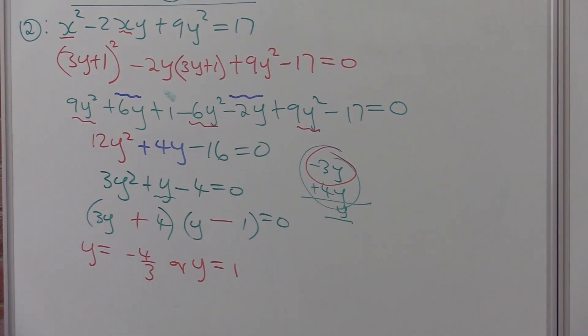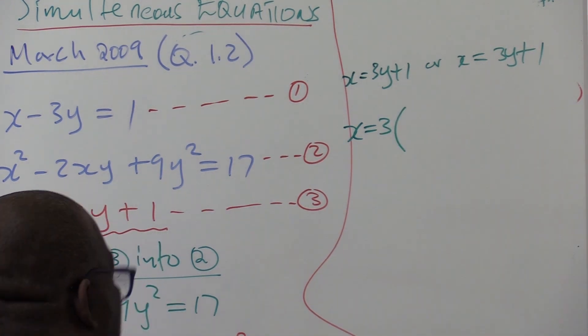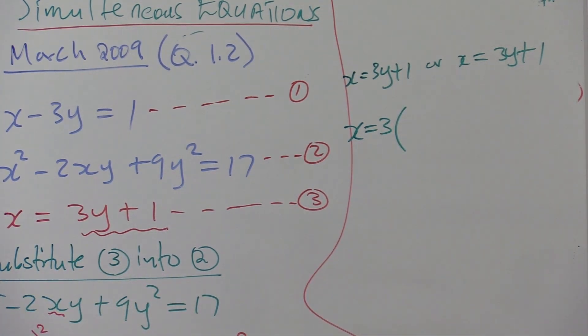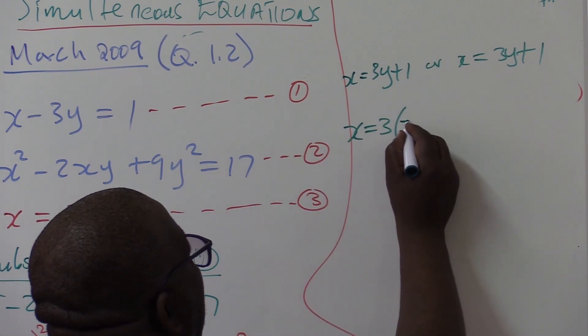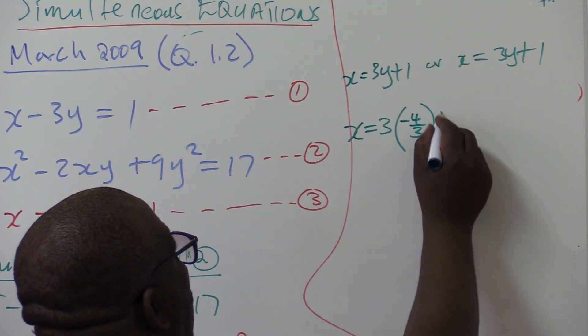Now, we need to find the corresponding x values. Using x equals 3y plus 1, what is the first y? It is minus 4 over 3. You substitute it: 3 times minus 4 over 3, then plus 1.